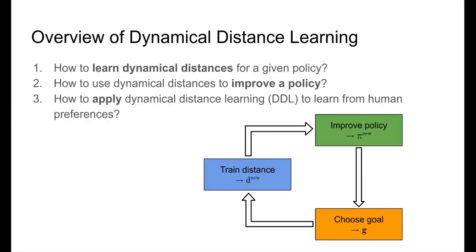We will go through the three main components of dynamical distance learning. First, we show how to learn a distance function for a given policy. Then, we will show how to improve the policy to reach goals using the learned distance function. And finally, we will propose a method for selecting the goals.